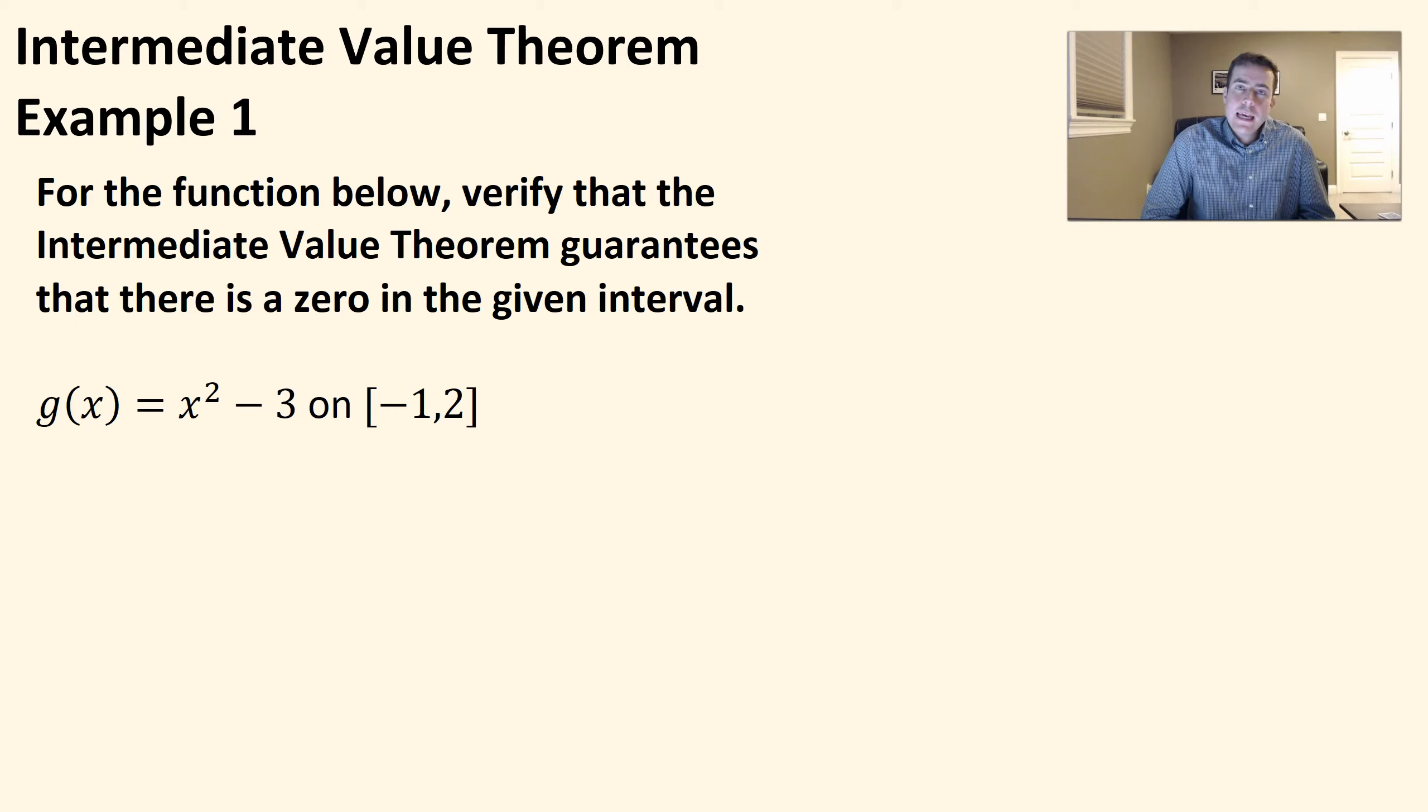All right, so we have our intermediate value theorem example here. It says, for the function below, verify that the intermediate value theorem guarantees that there is a zero in the given interval. Basically, we're verifying that we can get k equals zero.